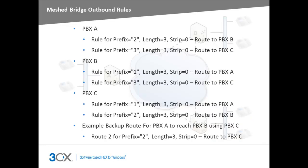Each PBX can be configured with two outbound rules to allow users to reach their remote colleagues. You could also go one step further and create backup routes. For example, if a user on PBX A wants to call a user on PBX B and the bridge connection between PBX A and PBX B has failed, PBX C can be utilized to relay calls between PBX A and B. We could also apply the same logic to all the members of this three-way meshed bridge.